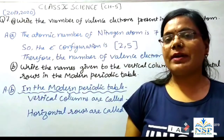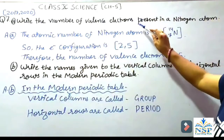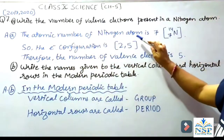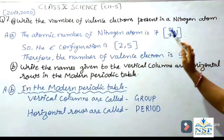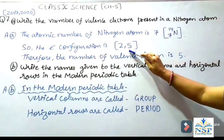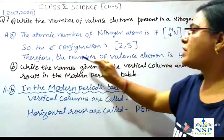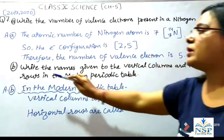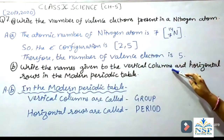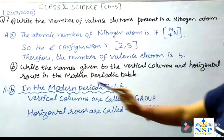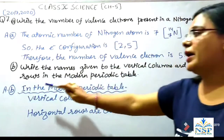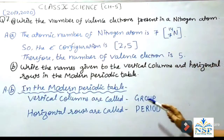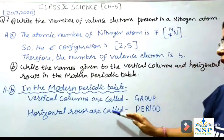Question No. 7: Write the number of valence electrons present in a nitrogen atom. The atomic number of nitrogen is 7, so its electronic configuration is 2, 5. Therefore, the number of valence electrons is 5, which are the outermost electrons. Also, write the names given to the vertical columns and horizontal rows in the Modern Periodic Table: the vertical columns are called groups and the horizontal rows are called periods.